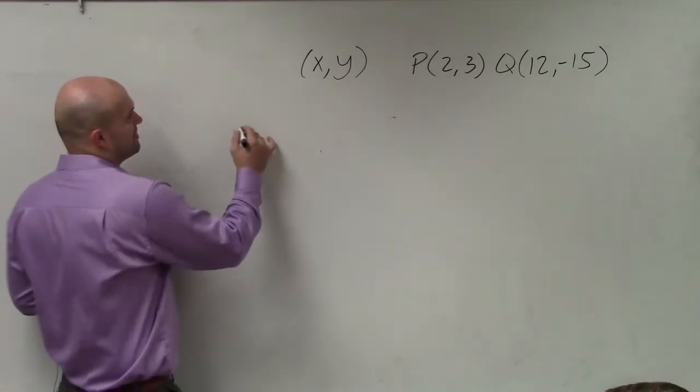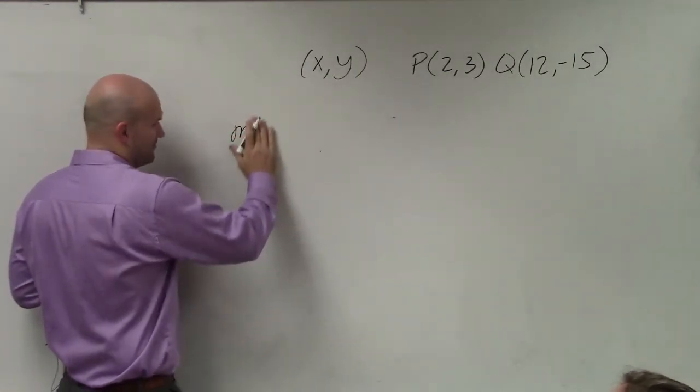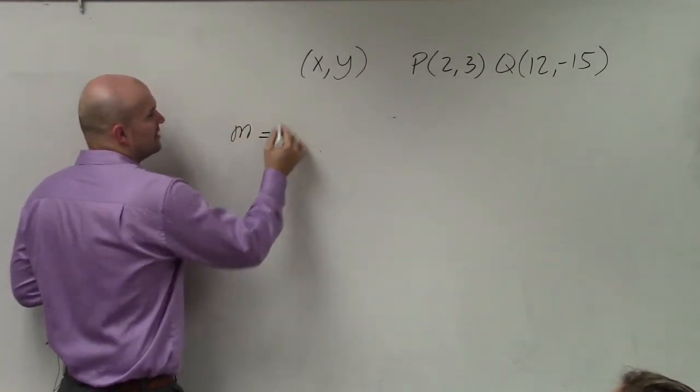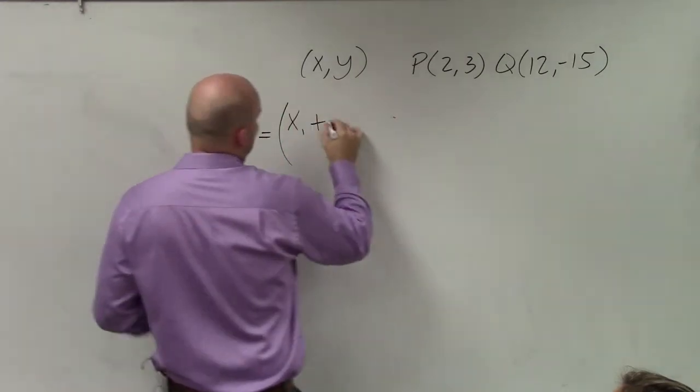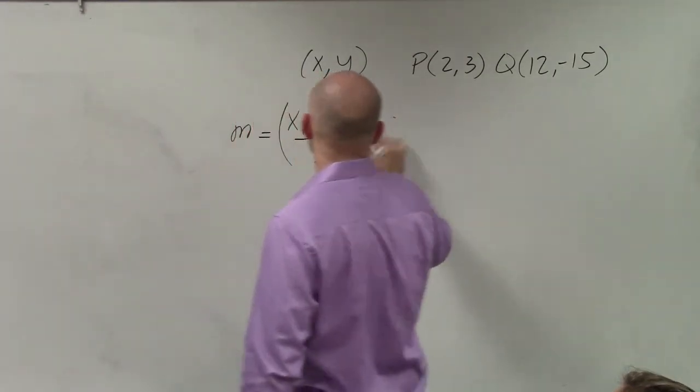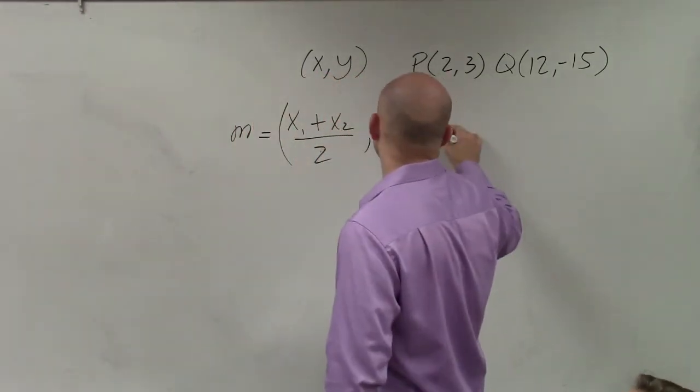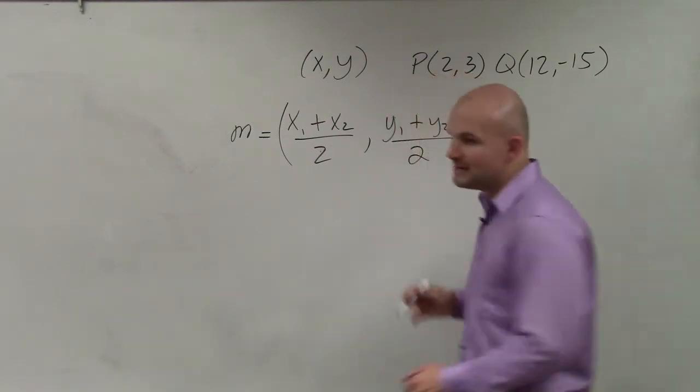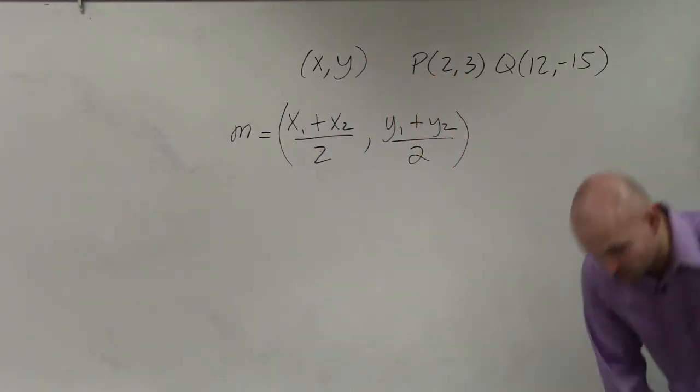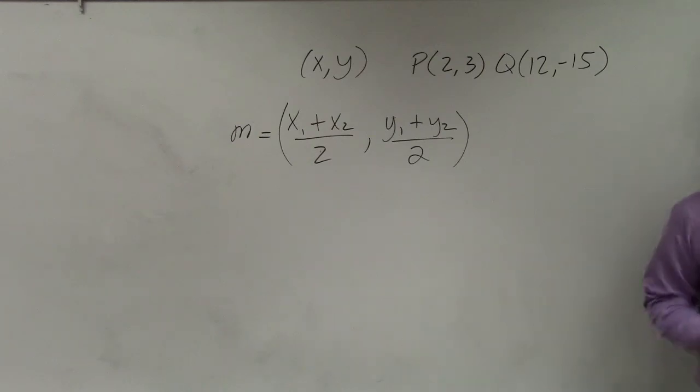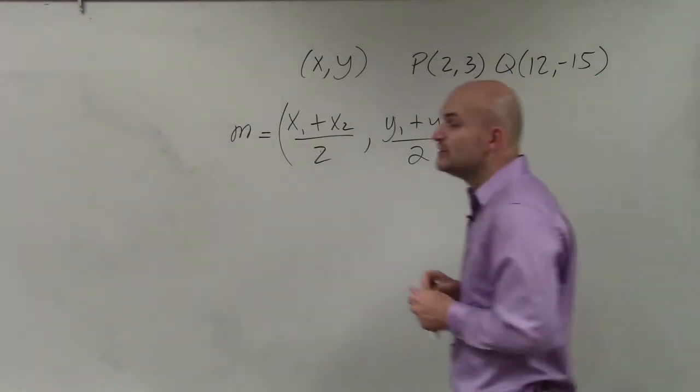So if you do not know the midpoint formula, the midpoint formula pretty much between any two points is equal to x1 plus x2 divided by 2, comma, y1 plus y2 divided by 2. Basically, all you're simply doing for the midpoint formula is finding the average distance between the two points.